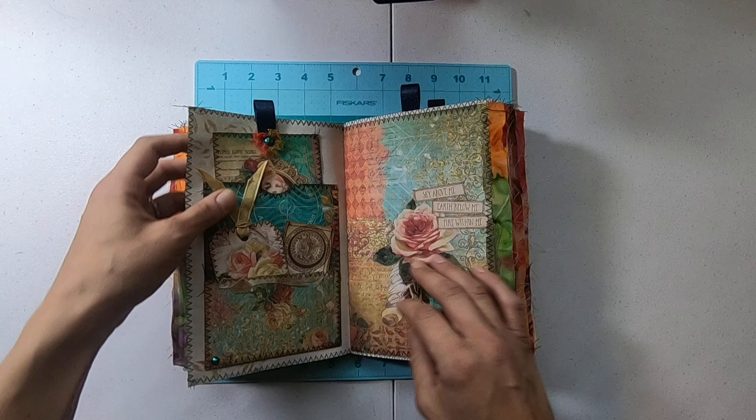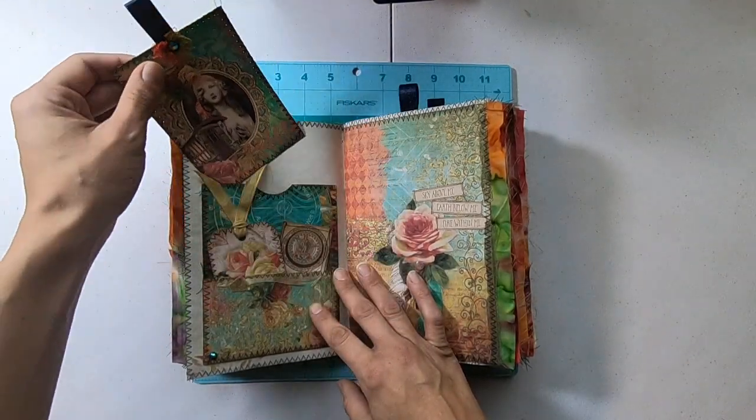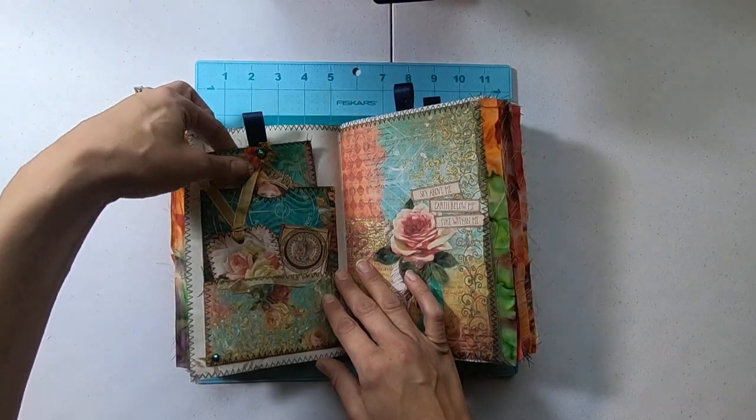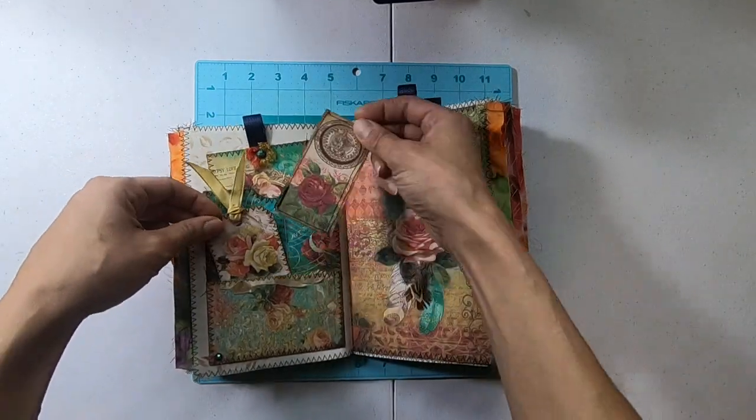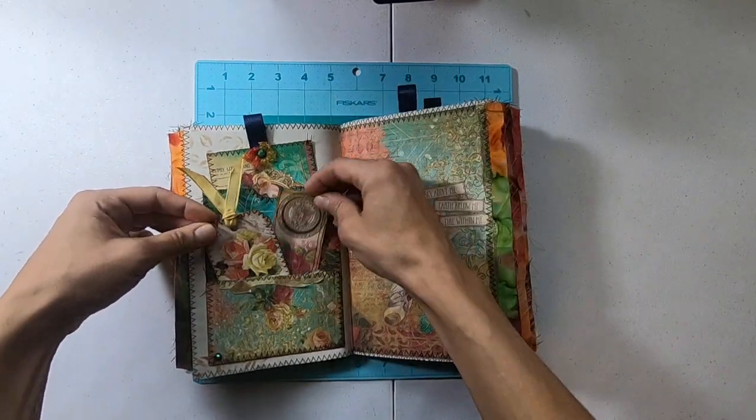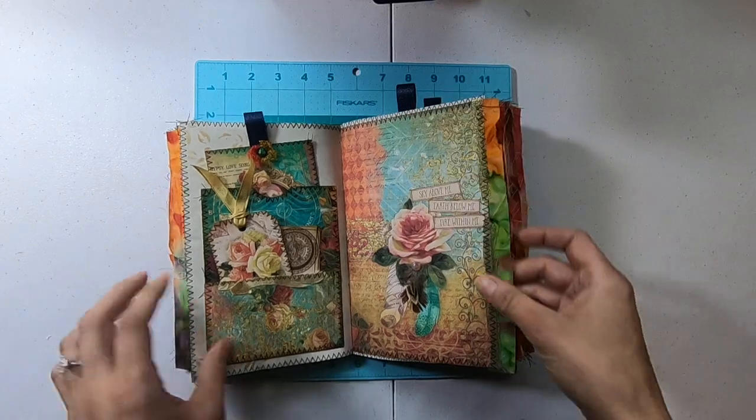Stenciling. This is a triple tuck pocket. Journaling card, tag. This is in the kit too. Another feather.